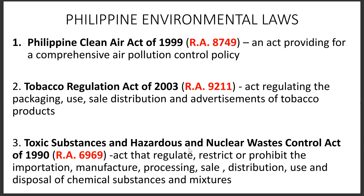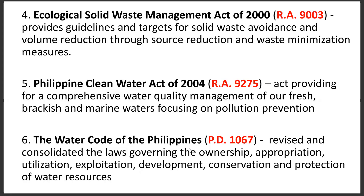The fourth law is the Ecological Solid Waste Management Act of 2000, RA 9003, which provides guidelines and targets for solid waste avoidance and volume reduction through source reduction and waste minimization measures. This law tells us not only how to segregate waste into biodegradable and non-biodegradable, but also what solid waste is and how to properly dispose of it.